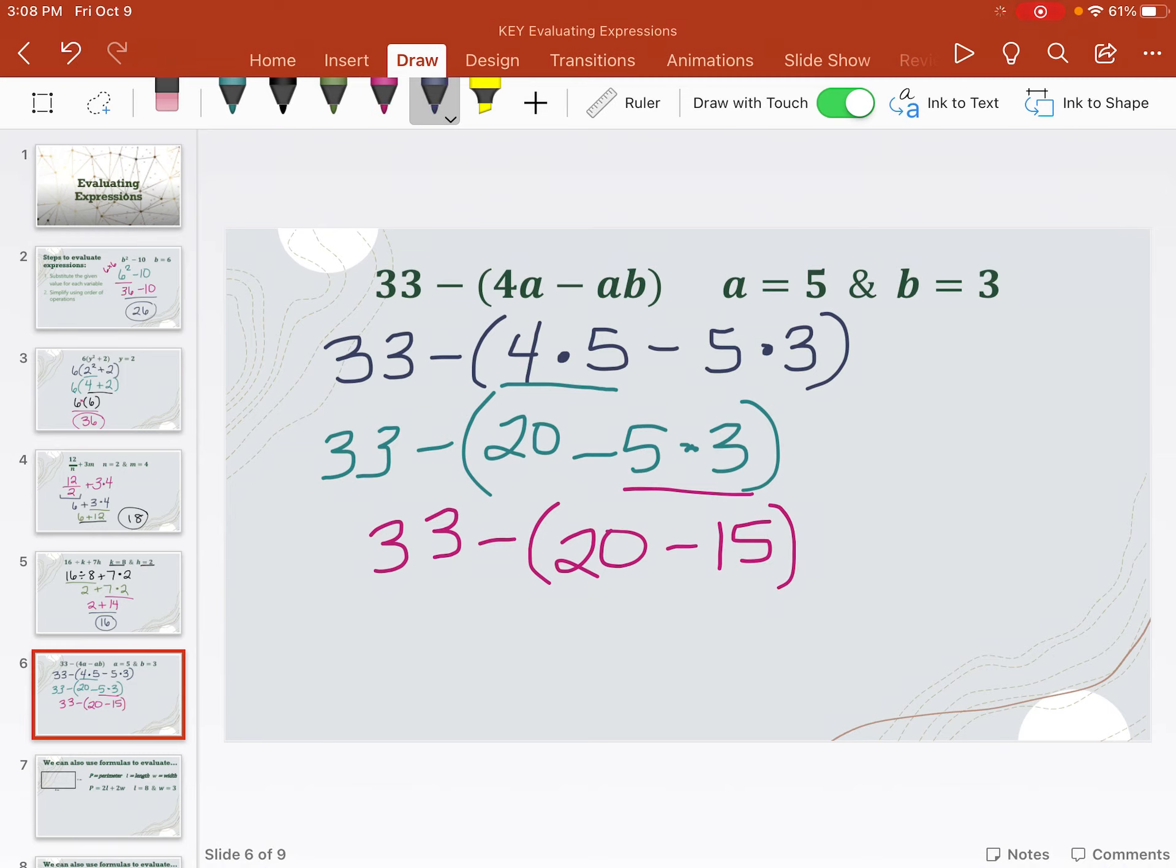Then I still have parentheses. Notice I'm not getting rid of the parentheses until there's only one number left in there. So now I'm going to do this 20 minus 15, which is 5. Bring everything else down. And finally, 33 minus 5 equals 28. That's our answer.